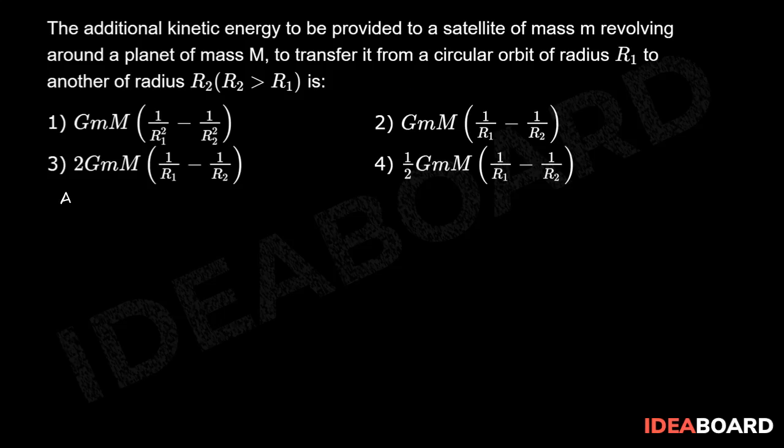According to the law of conservation of energy, delta E is equal to Ef minus Ei. Total energy in any orbit